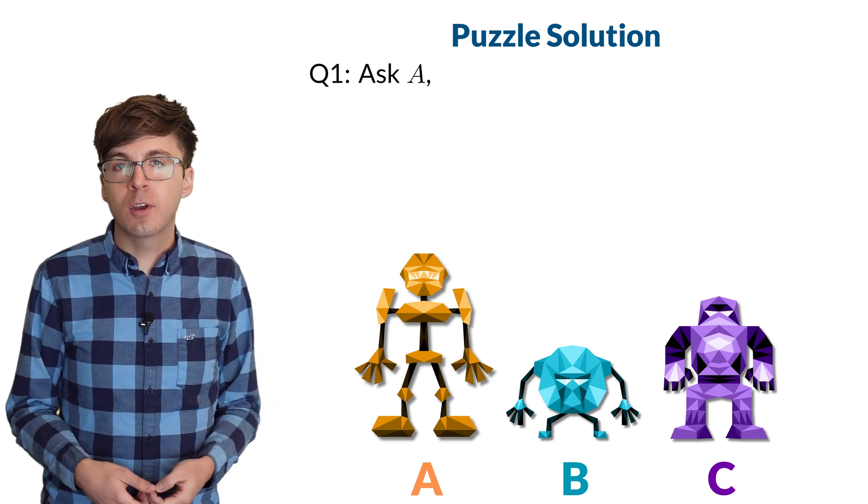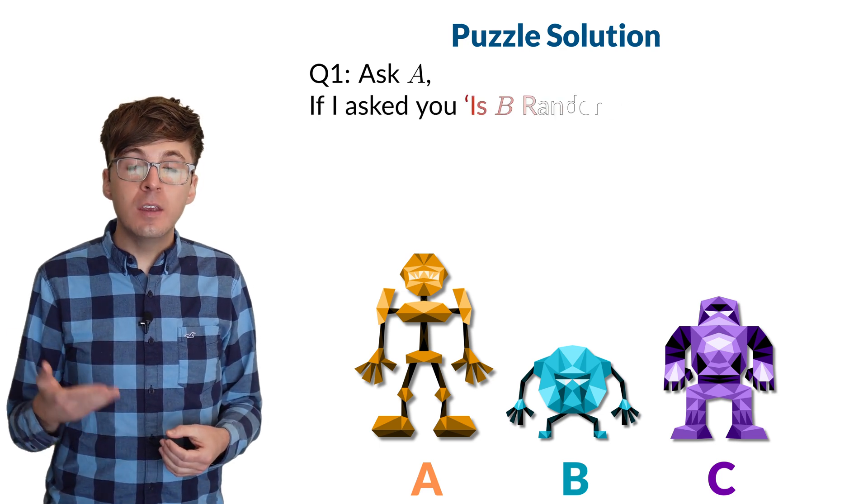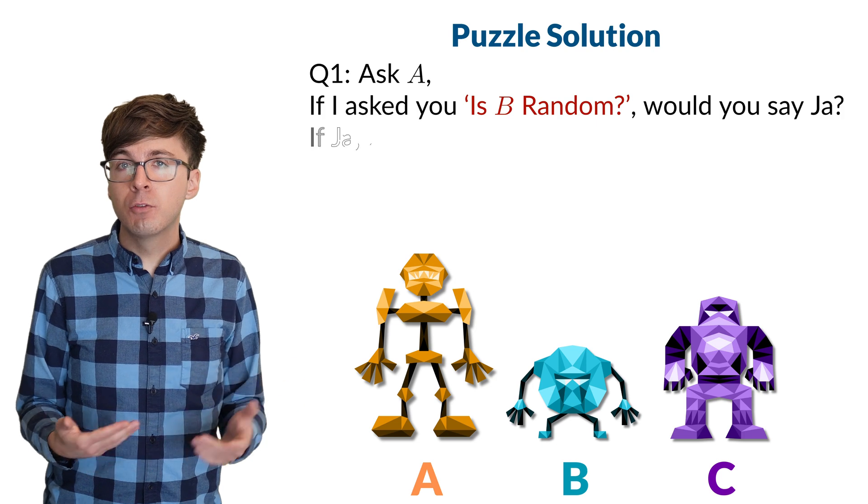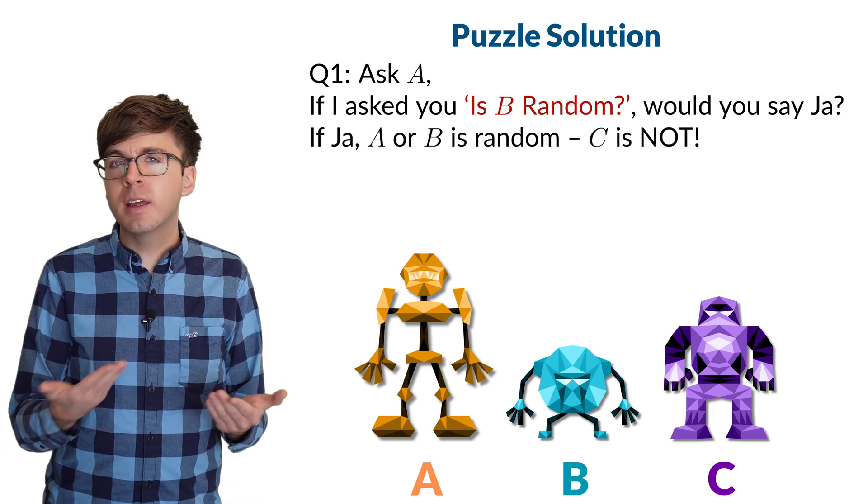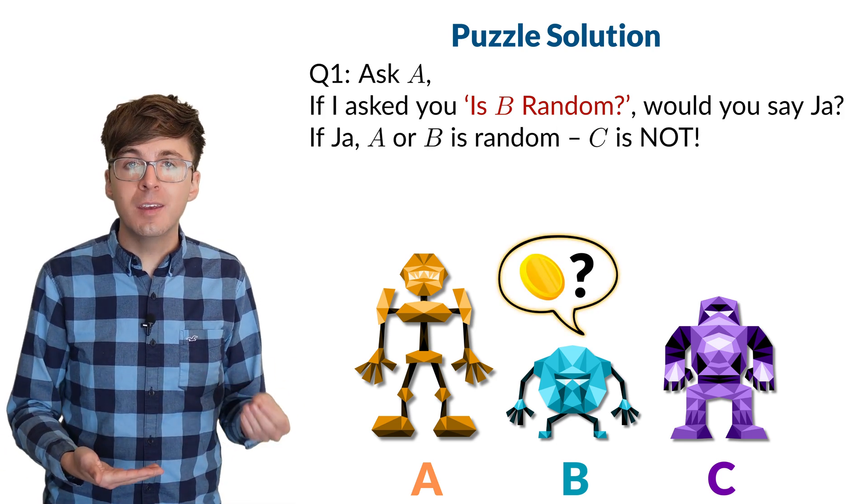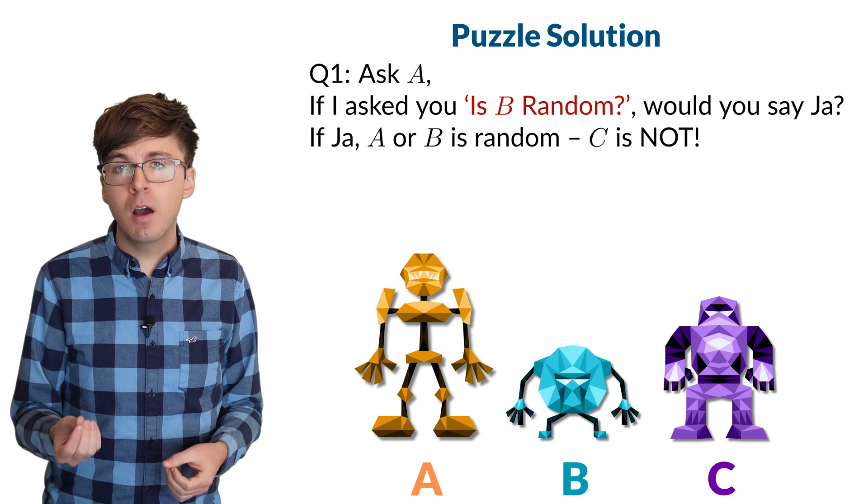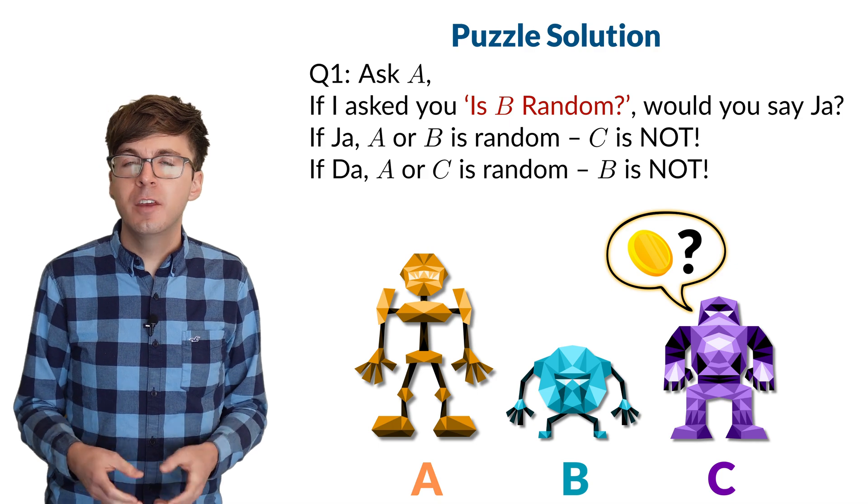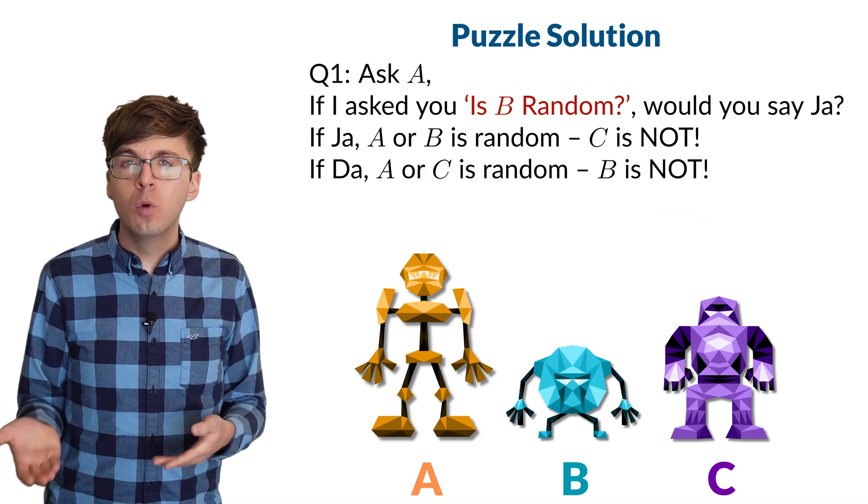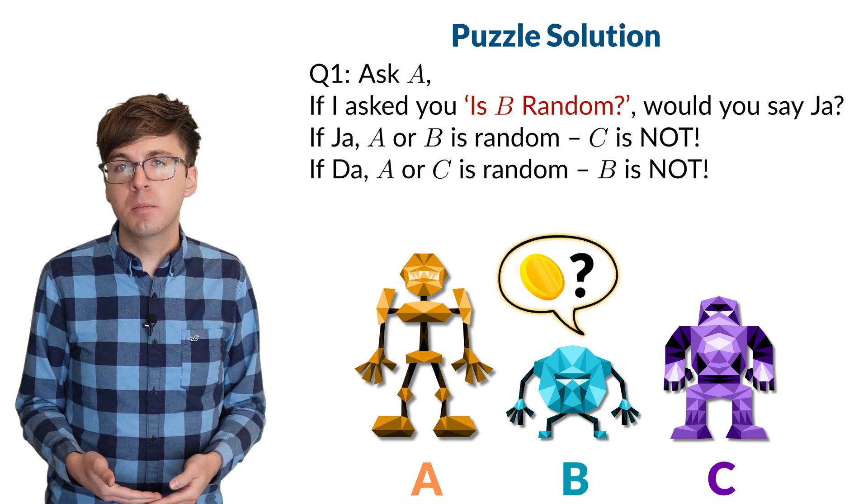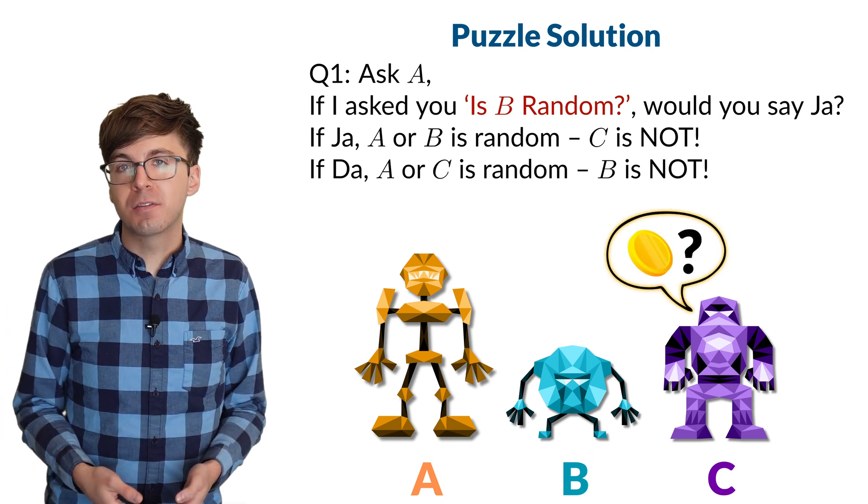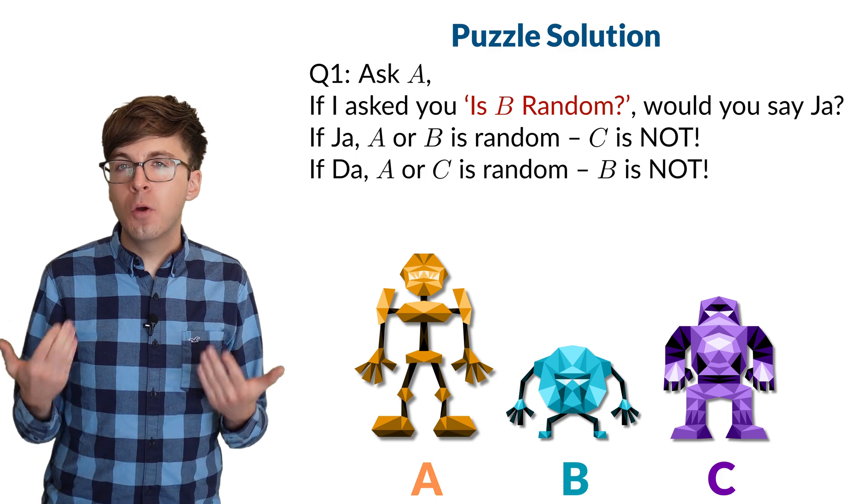Let's ask A this question. If I asked you, is B random, would you say ya? If A is either true or false, then we know that an answer of ya means that B is random. And an answer of da means that B is not random, so C must be random. So if the answer is ya, we'll know C is definitely not random. And if the answer is da, then we'll know that B is definitely not random.